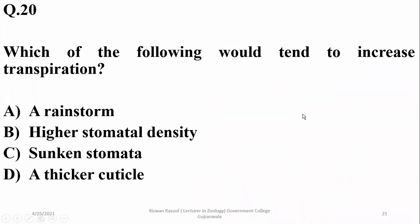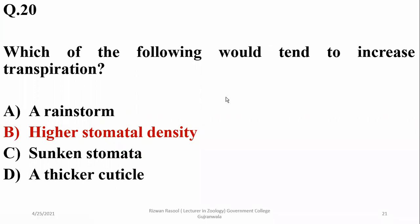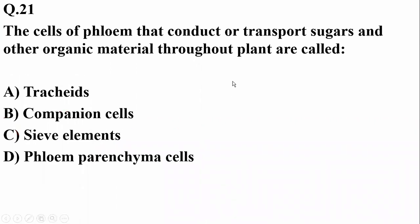Question twenty: which of the following would tend to increase transpiration? A high stomatal density will promote the rate of transpiration by allowing more water molecules to escape, but a rainstorm, sunken stomata, and a thick cuticle will all reduce the rate of transpiration. So the right option is Beta.